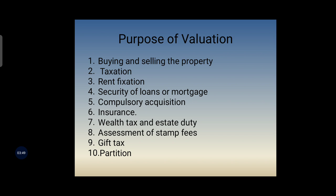The third purpose is rent fixation. In order to determine the probable amount of rent to be received from a property, the process of valuation is carried out. Rent is usually fixed at a certain percentage of the valuation amount, that is 6–10% of the valuation of the property. The fourth purpose is security of loans or mortgage — when loans are to be granted against the property, the probable value is worked out by the process of valuation. This is called a mortgage loan.